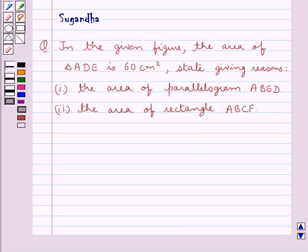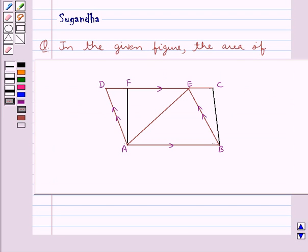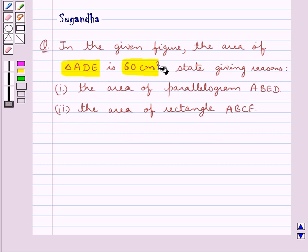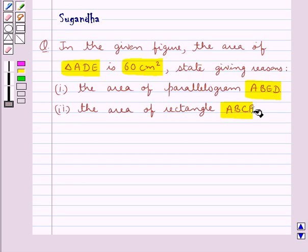Hello and welcome to the session. In this session we discuss the following question: in the given figure, the area of triangle ADE is 60 cm². We are asked to state, giving reasons, first, the area of parallelogram ABED, and second, the area of rectangle ABCF.